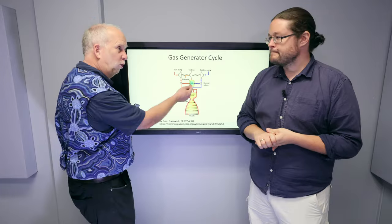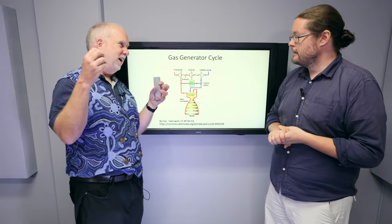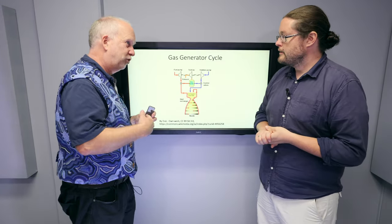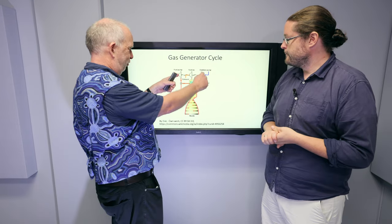And that small fraction drives a turbine. This is the mini rocket we were talking about. It fires the jet into the turbine, which spins the turbine, and that's on the crankshaft to the two pumps.